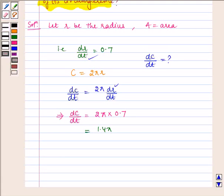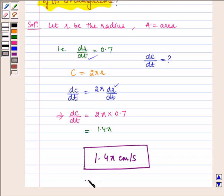Hence, circumference of the circle is increasing at the rate of 1.4 pi centimeter per second, which is the required answer. I hope you understood this question. Bye and have a nice day.